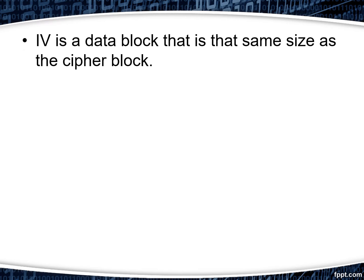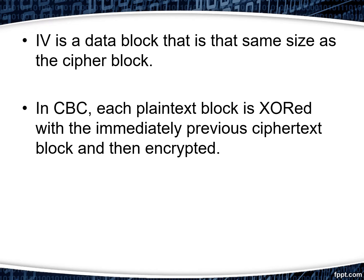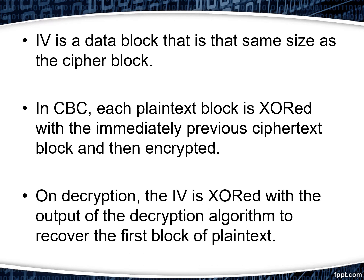The IV is a data block that is the same size as the cipher block. In CBC, each plain text block is XOR'd with the immediately previous cipher text block and then encrypted. On decryption, the IV is XOR'd with the output of the decryption algorithm to recover the first block of plain text.